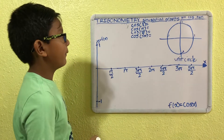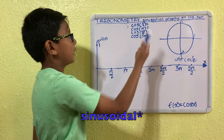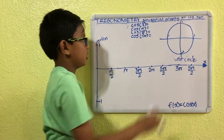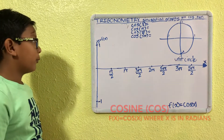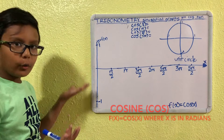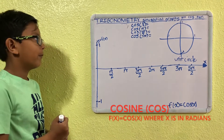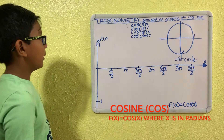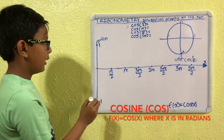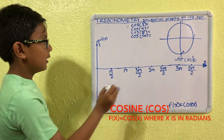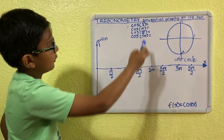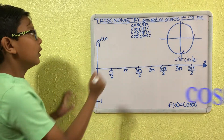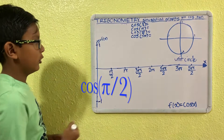If you don't know what the sinusoidal functions are, it's basically just sine, cosine, and tangent. First one up, we have cosine. We have the problems here, and I'm going to graph it here, and I'm going to use the unit circle to find the values. First one: cosine of pi over 2.